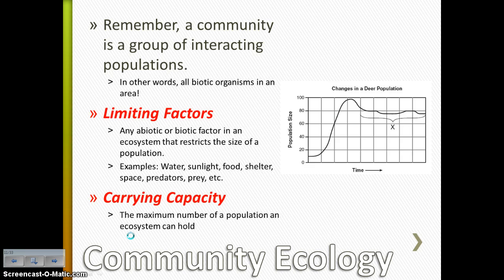Communities — remember those are all the interacting populations, all the biotic factors — are controlled by what's called limiting factors. Anything that can restrict or control the size of a population is called a limiting factor. You can have water be a limiting factor, sunlight, food, shelter, space, predators, prey — all of those things can control the size of a population. And then once you reach what's called the carrying capacity, you've reached the maximum number of a population that an ecosystem can support.